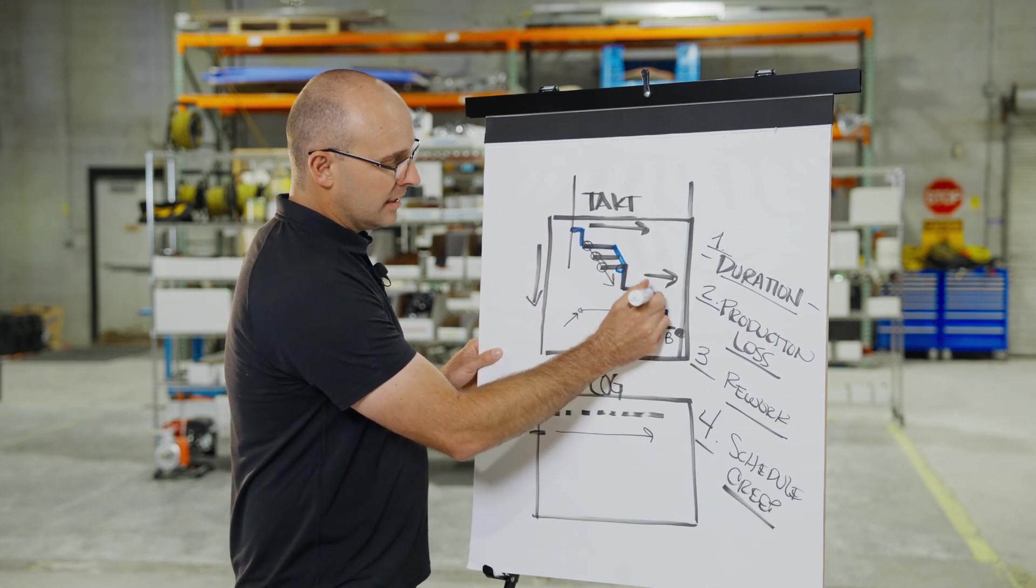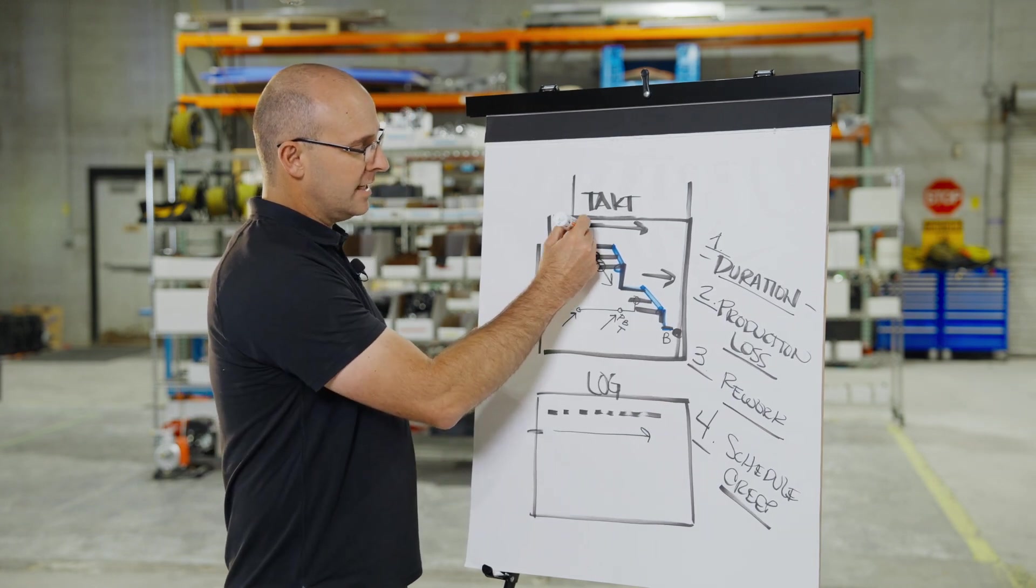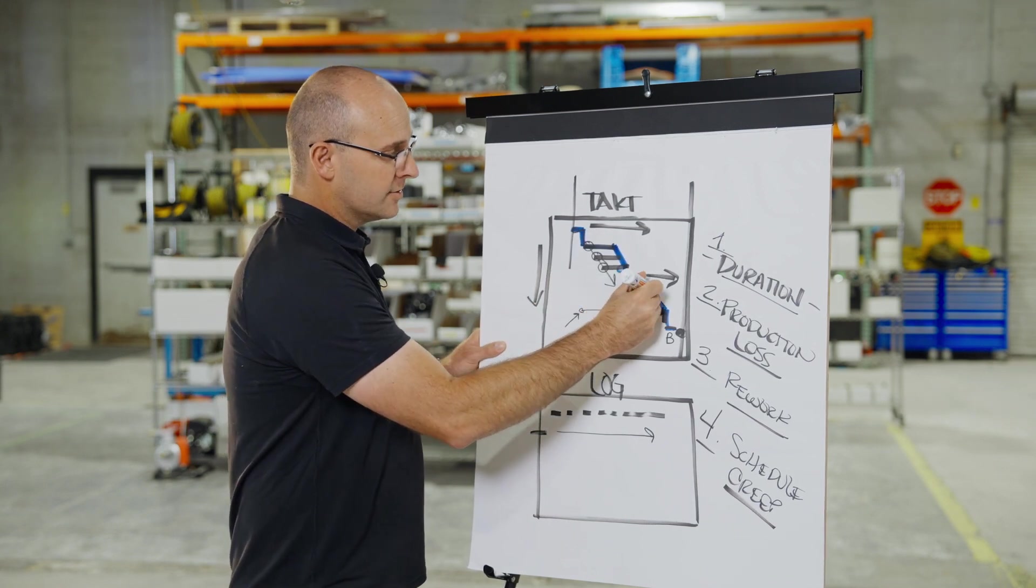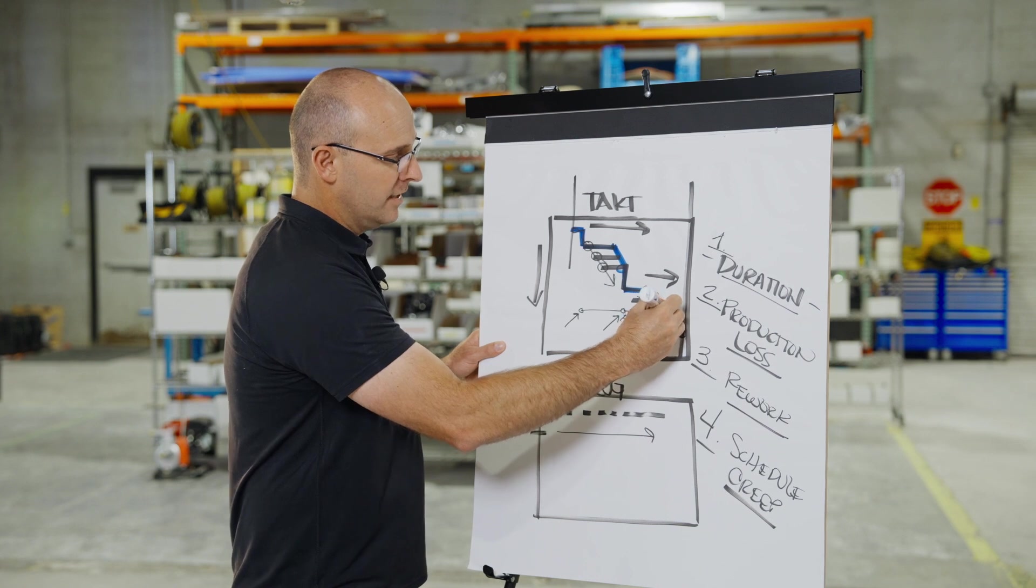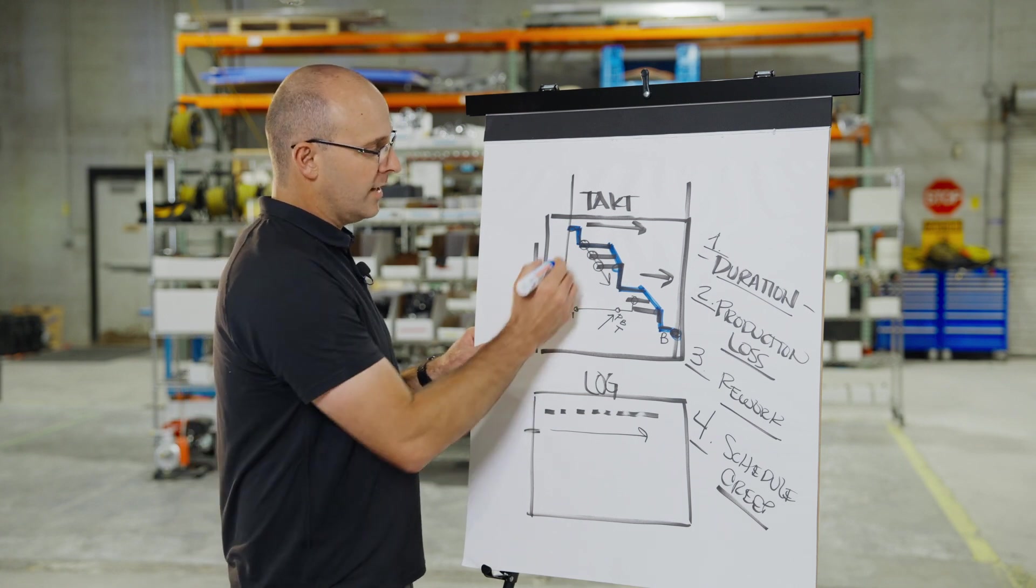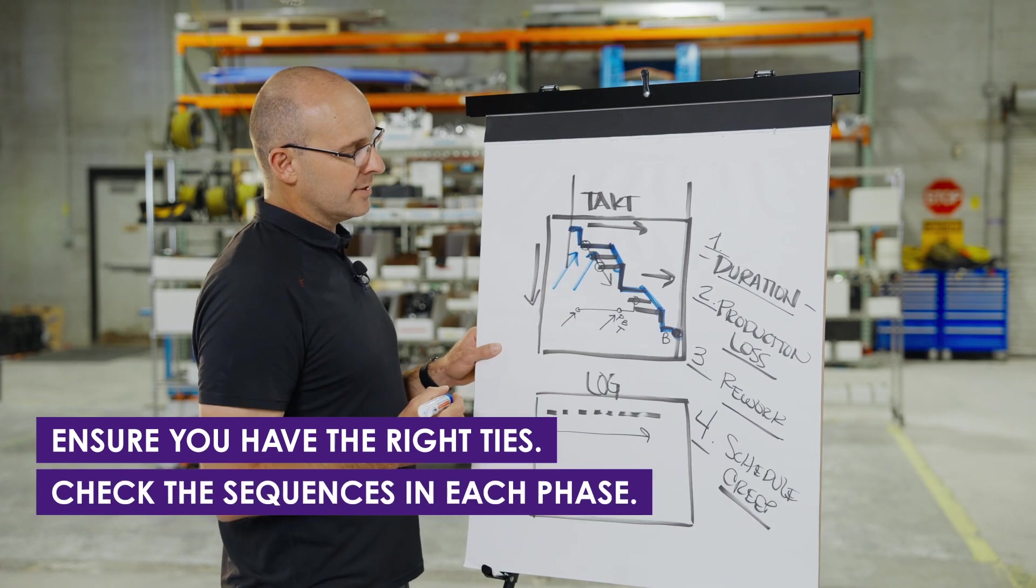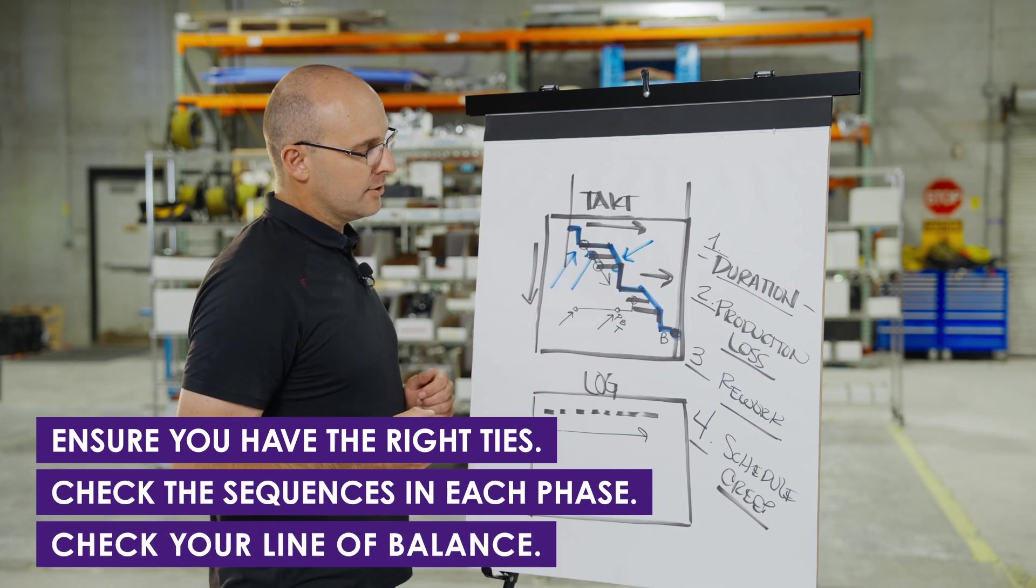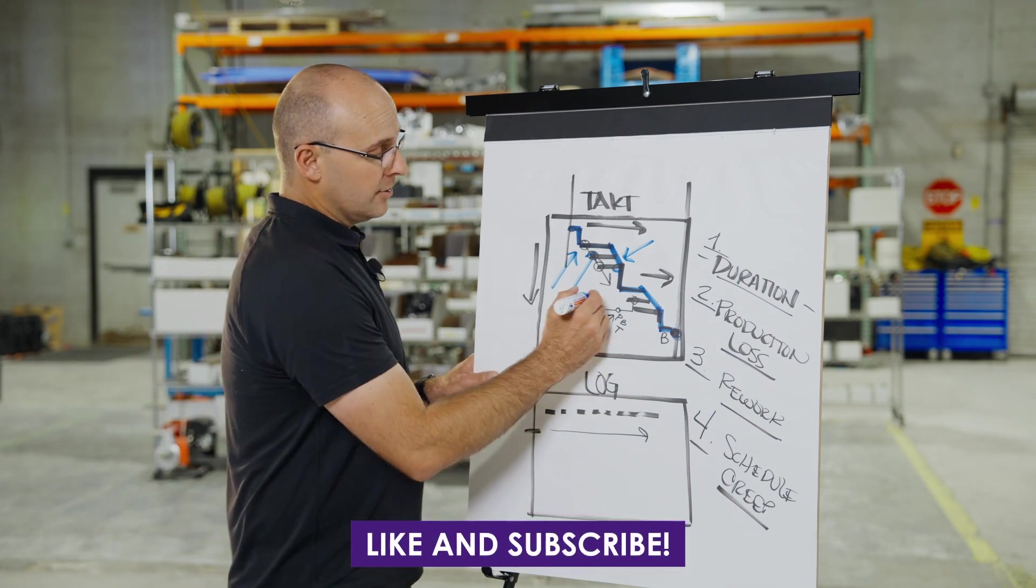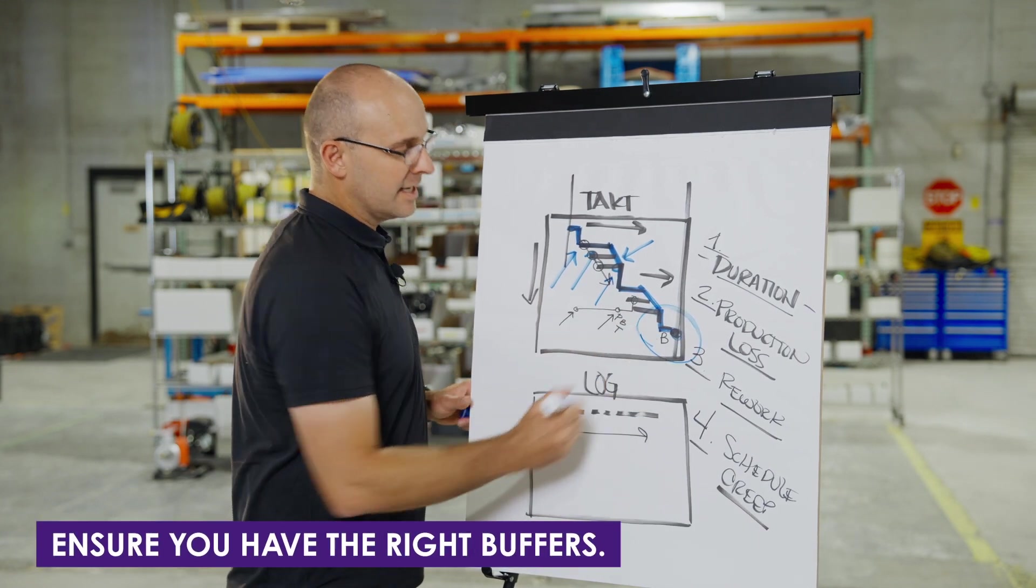What you'll want to do is trace from your start date to your tie, to your sequence, to your line of balance, to your buffer, your tie, your sequence, line of balance, buffer, your tie, and your buffer all the way to the end. You'll want to make sure that you have a couple key things. Number one, you'll want to make sure that you have the right ties. Number two, you'll want to check the sequences in each phase. Number three, you'll want to check your line of balance. We cover this in other videos, so please like and subscribe to this channel. You'll also want to go through and make sure that you have the right buffers. At the end of this schedule, you should have buffers.